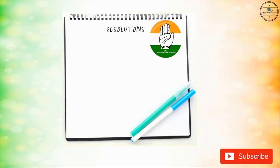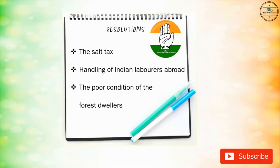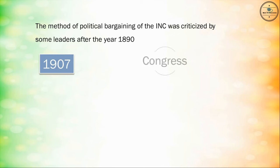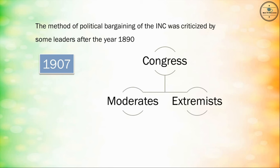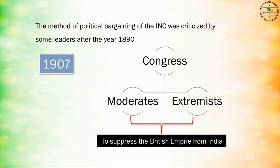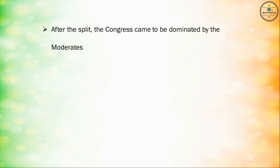Resolutions were also passed in the annual meetings of the INC regarding the salt tax, handling of Indian laborers abroad, and the poor condition of forest dwellers. The method of political bargaining of the INC was criticized by some leaders after 1890. In 1907, the Congress split into two groups: moderates and extremists. Moderates wanted to oppose the British peacefully, but the demands of the extremists were aggressive. Both groups, however, aimed to end British rule in India. After the split, the Congress came to be dominated by the moderates.